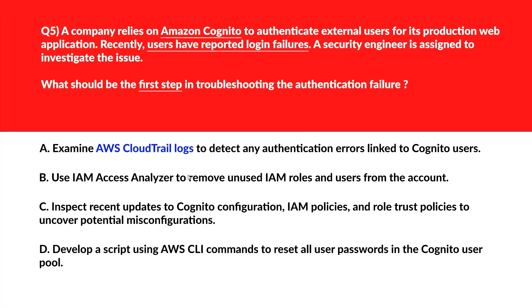Let's bring the heat. We need the first step in troubleshooting an authentication failure. The company uses Amazon Cognito to authenticate external users. Option A says: examine AWS CloudTrail logs to detect any authentication errors linked to Cognito users. CloudTrail logs may help with event tracking, but it is not the first step when configuration changes may have caused the issue. So this is out.